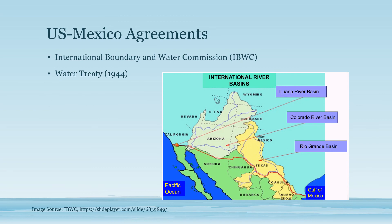In addition to agreements with Canada, the United States has agreements with Mexico about shared waters. The International Boundary and Water Commission, or IBWC, is a U.S.-Mexico bi-national organization to manage shared resources and resolve disputes, especially on the Colorado and Tijuana rivers and the Rio Grande. It was established under the Water Treaty with Mexico in 1944, which also authorized dam construction on the Rio Grande. There have been some disagreements about which country hasn't been meeting delivery obligations under the treaty, and while the IBWC has successfully resolved most of those disputes, the process is often very slow.